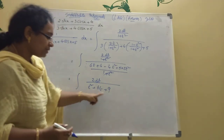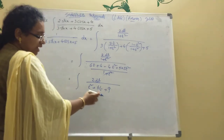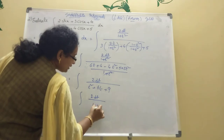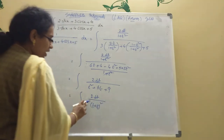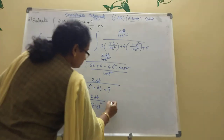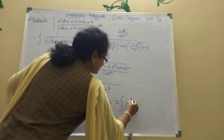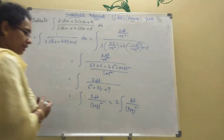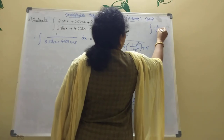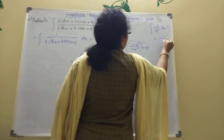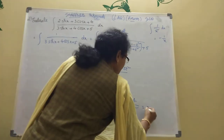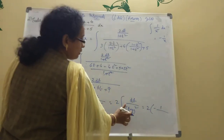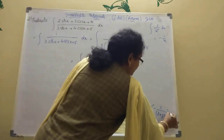Notice t² plus 6t plus 9 equals (t plus 3)². So we have integration of 2 dt divided by (t plus 3)². Using the formula: integration of 1/x² dx equals minus 1/x, we get 2 times (minus 1/(t plus 3)), which equals minus 2/(t plus 3) plus C. Substituting back t equals tan(x/2): the answer is minus 2/(tan(x/2) plus 3) plus C.